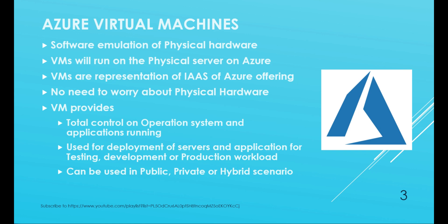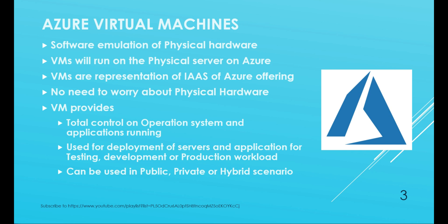The benefits that virtual machines provide include total control over the operating system and applications running — there is a typo on screen, it should read 'operating system and applications running.' Virtual machines are used for deployment of servers and applications for testing, development, and production workloads. They can be used for public, private, or hybrid scenarios — you can have VMs running on a public cloud, private cloud, or a mix of the two.